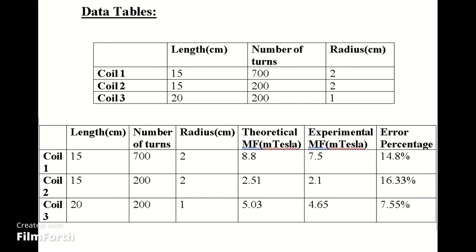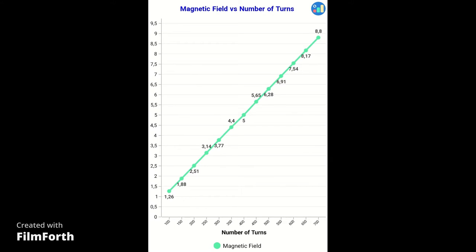Having these data gives us the opportunity to plot their graphs. The purpose of this graph is to show the relationship between the number of turns and magnetic field, and they are directly proportional as can be seen.